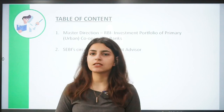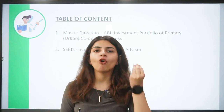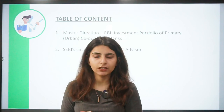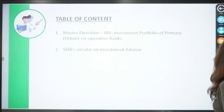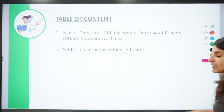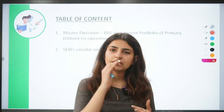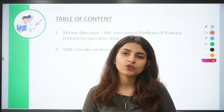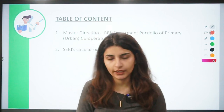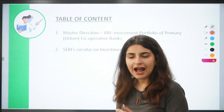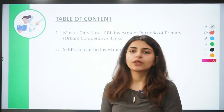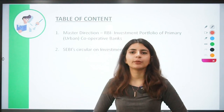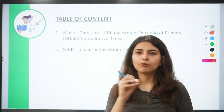The first one is about RBI's master directions related to the investment portfolio of Primary Urban Cooperative Banks. We have previously covered two to three master directions especially related to primary urban cooperative banks — the tiered structure based on deposits, the net worth to maintain, and the capital adequacy ratio. These are very important and will definitely be asked in your exams.